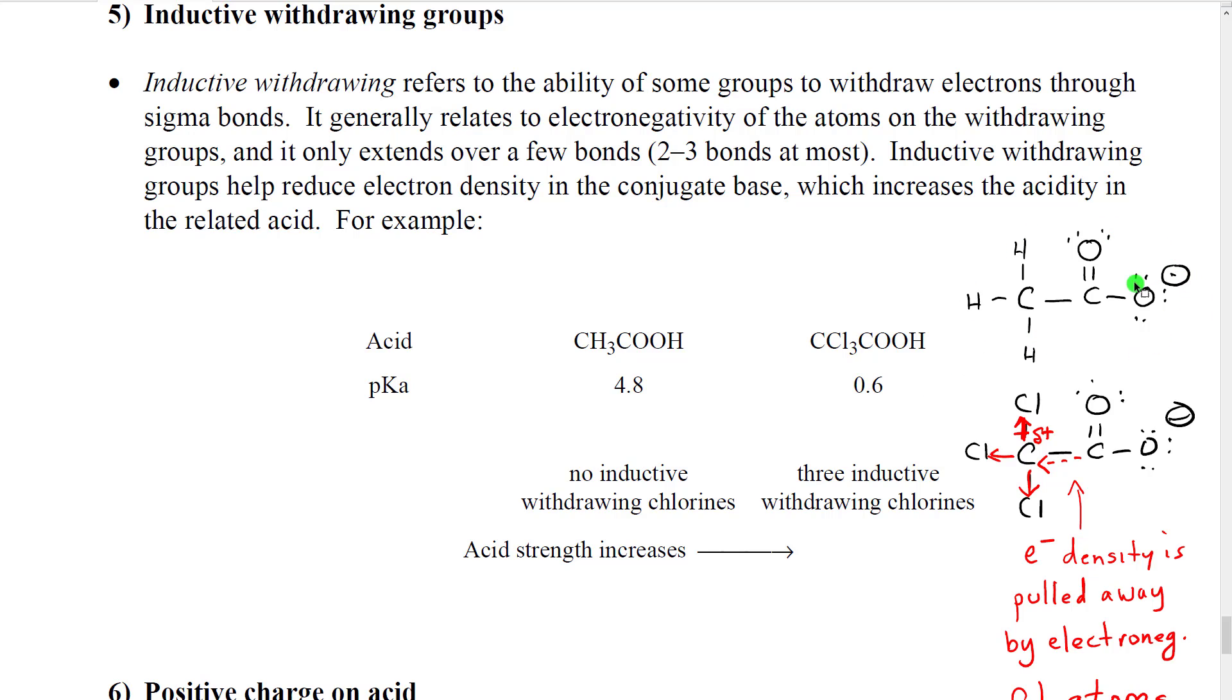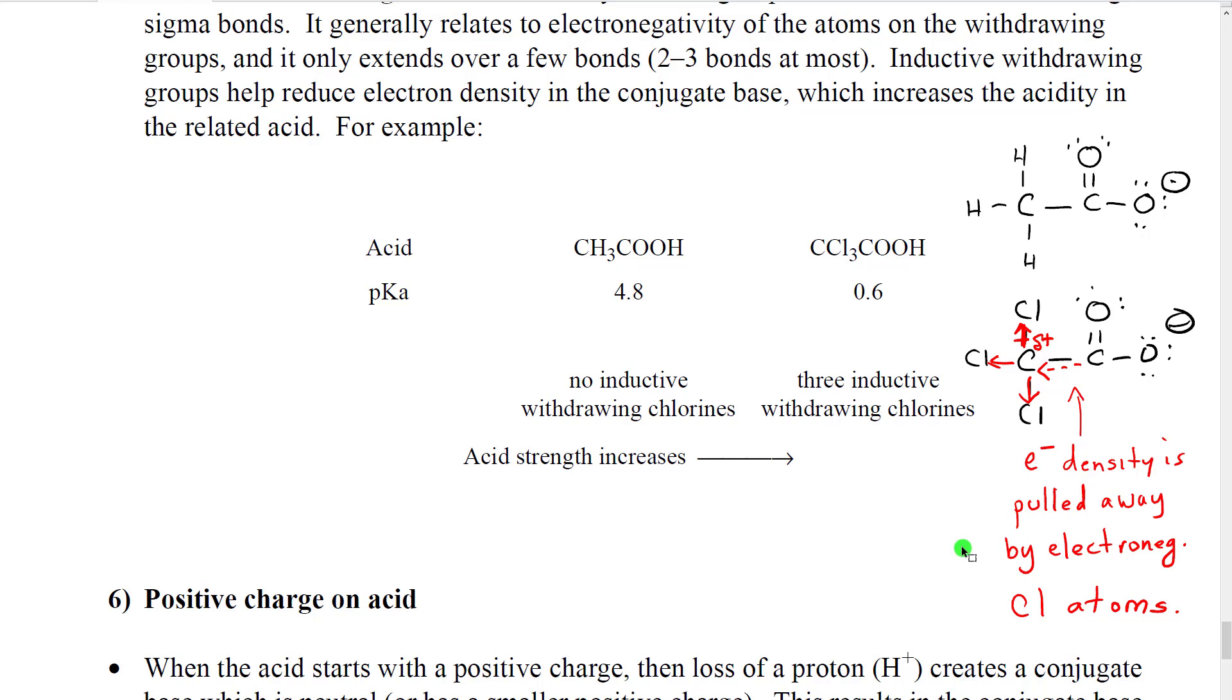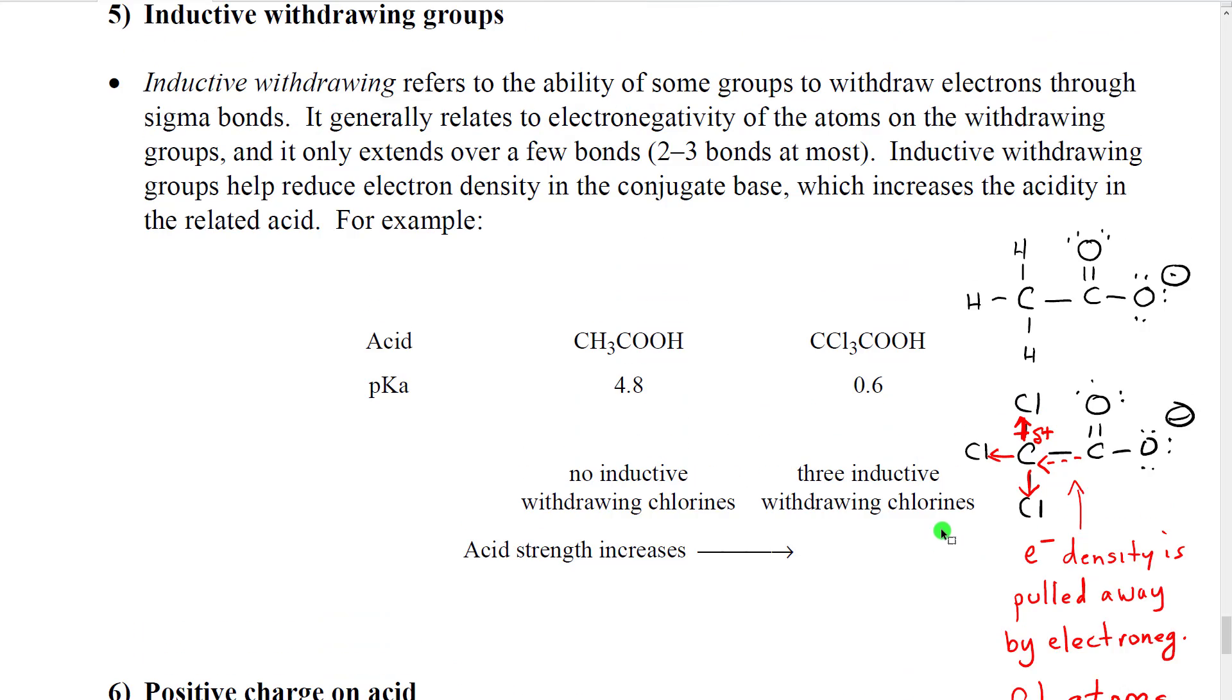What that is going to do then is, in our conjugate base, where we have electron density in this region, those chlorines are going to pull electrons away from this carbon, which will then get a positive charge, partial positive charge, which will then pull electrons out of this region, and spread them into a larger area of space. That reduces the electron density, it decreases the repulsive forces, and it causes this ion to become more stable than that ion, so therefore, this acid will become stronger than that acid.